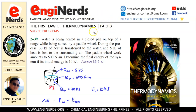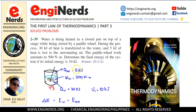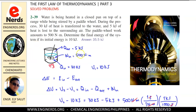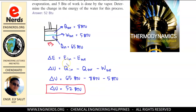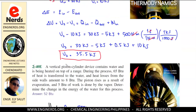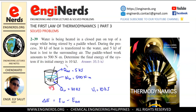Alright, so we are now on the third part of our discussion for the first law of thermodynamics, and this time we will be solving problems from Thermodynamics and Engineering Approach 8th edition by Cengel. We will be solving problem 2-39 and problem 2-40. We will be applying the first law of thermodynamics, which states that energy cannot be created nor destroyed, but can be transferred from one form to another.